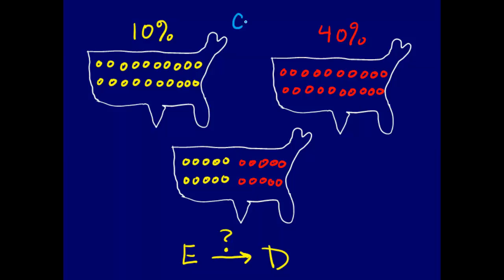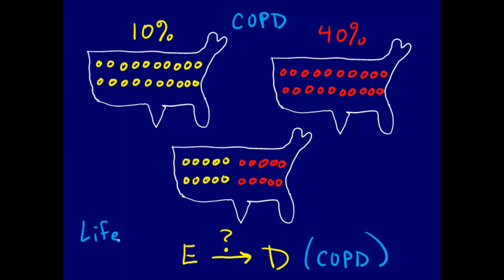We want to know: is the exposure a cause of the disease? My exposure is going to be tobacco smoke exposure — let's call it lifetime smoking. That's the exposure variable. If we want to think about whether lifetime smoking is a cause of COPD, then we have to have a population in mind. We're using NHANES data, so we're looking at the non-institutionalized US population.